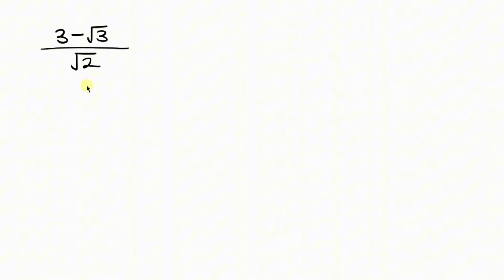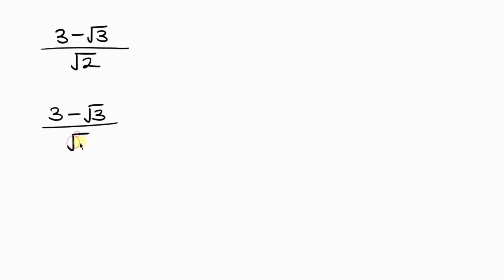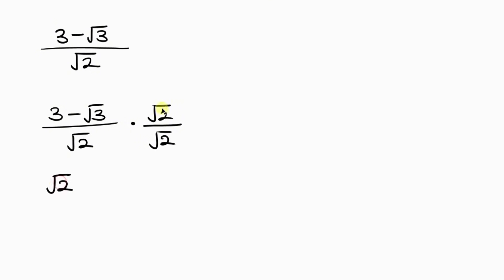Our next step will be for us to rationalize the denominator. So we have 3 minus the square root of 3, all over the square root of 2. Rationalizing the denominator means we multiply the numerator by the square root of 2, and also multiply the denominator by the square root of 2. So 3 minus the square root of 3 times the square root of 2 is the same as writing the square root of 2 times 3 minus the square root of 3.